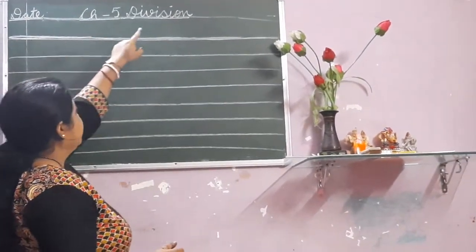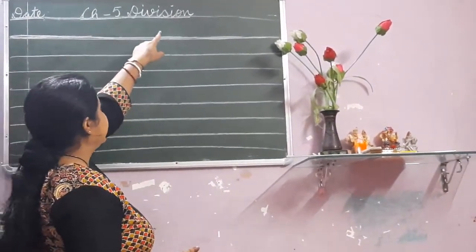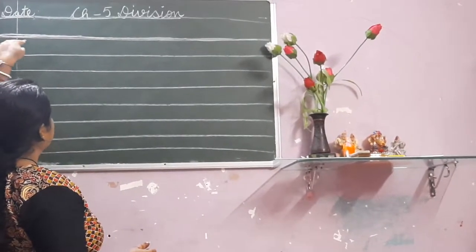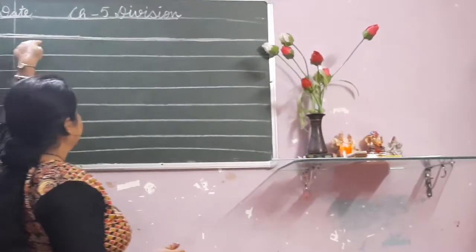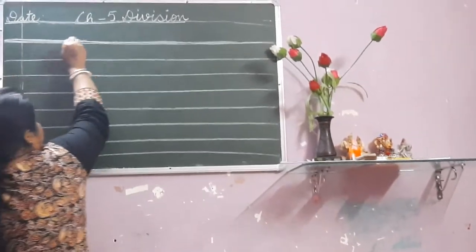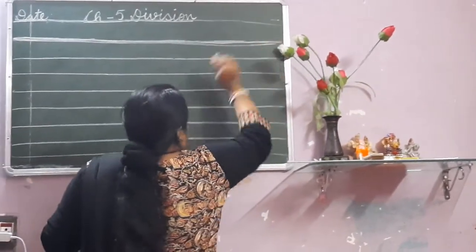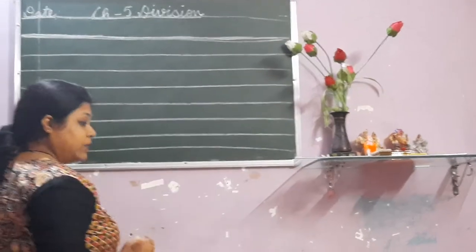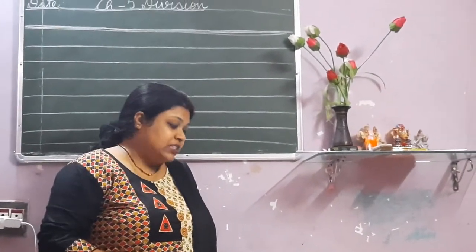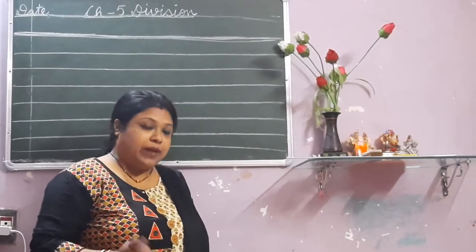Chapter 5 division will be written on the top, then the date. You leave that line and give a margin from outside. You will give a straight margin with the help of the ruler. After that, take out page number 93 of your maths textbook, not mental maths.